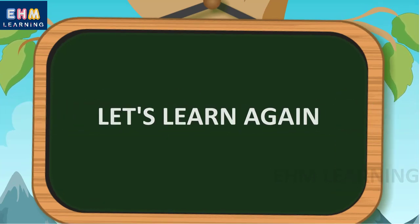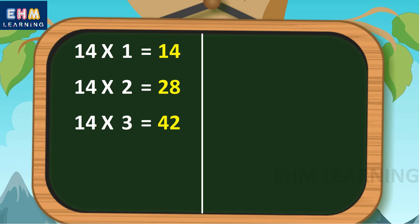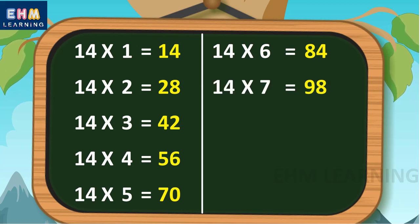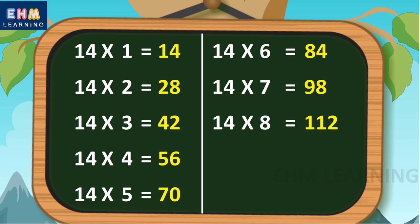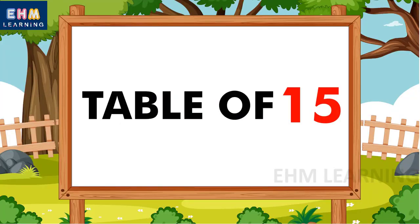Let's learn again. Fourteen ones are fourteen, fourteen twos are twenty-eight, fourteen threes are forty-two, fourteen fours are fifty-six, fourteen fives are seventy, fourteen sixes are eighty-four, fourteen sevens are ninety-eight, fourteen eights are one hundred and twelve, fourteen nines are one hundred and twenty-six, fourteen tens are one hundred and forty.